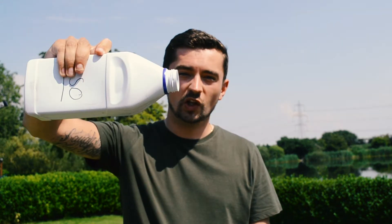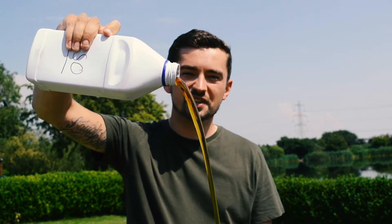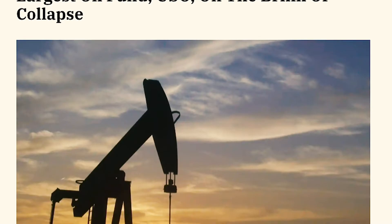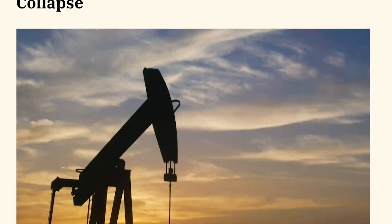But what exactly happened back in April? The largest oil fund in the world, the United States Oil Fund with the ticker symbol USO, had over $4.5 billion in assets. Then they completely imploded, losing 75% of their value since January alone. This was a direct consequence of the oil price crashing.